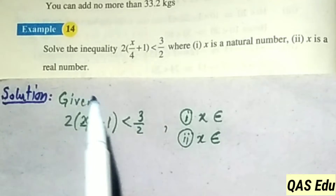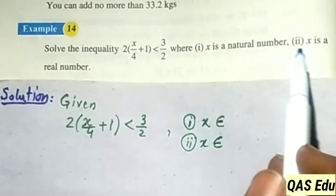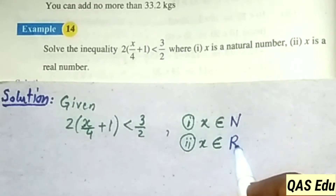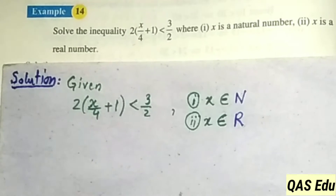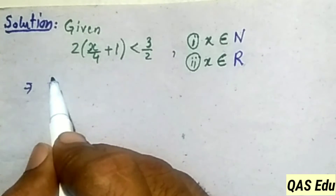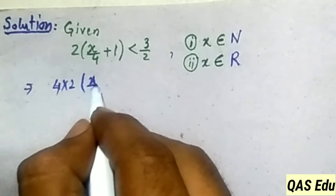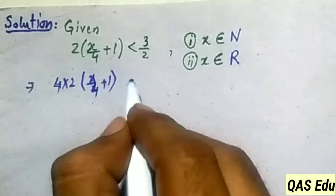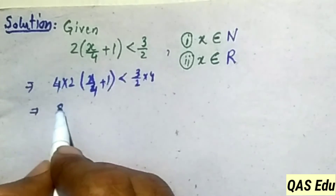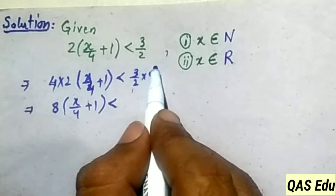Example 14: The question involves an inequality. Where x is a natural number and where x is a real number, we find the solution under each condition. To solve, we multiply both sides by the LCM. X over 4 plus 1 is less than 2.